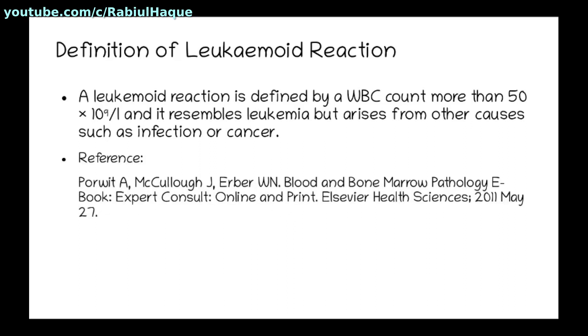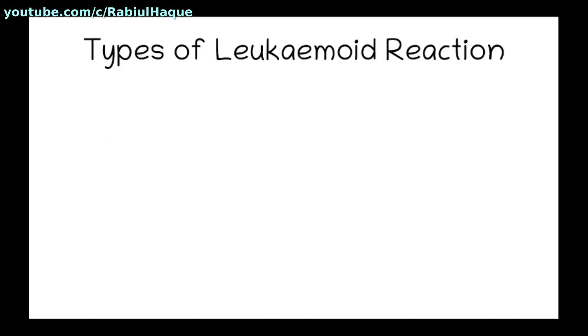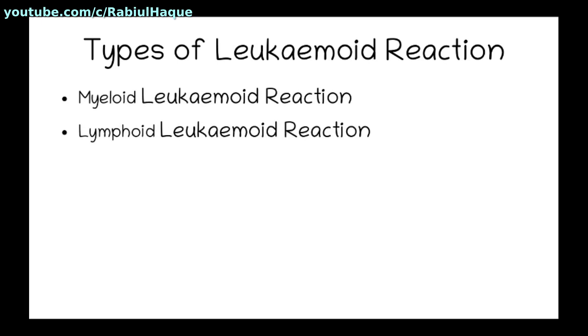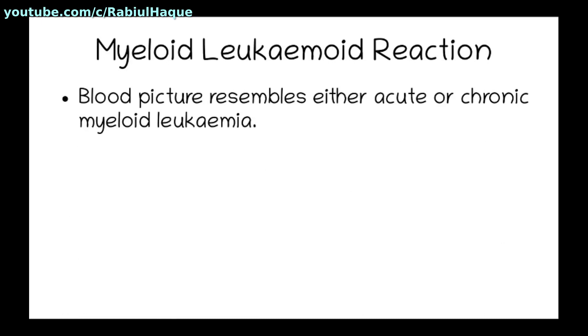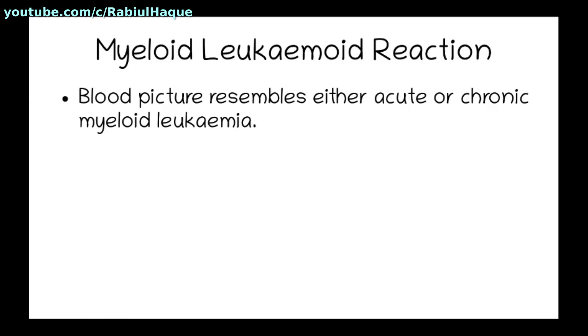Now that we have defined leukemoid reaction, let's move on and talk about the types. There are two types: myeloid leukemoid reaction and lymphoid leukemoid reaction. In myeloid leukemoid reaction, the blood picture resembles either acute or chronic myeloid leukemia. There may be marked neutrophilic leukocytosis and presence of premature white blood cells of all stages, which may mimic chronic myeloid leukemia.